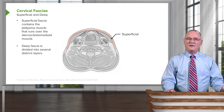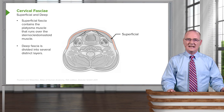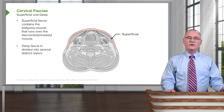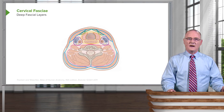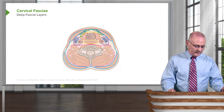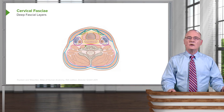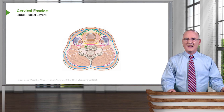Next, we have deep fascia. The deep fascia is more complex in that it is divided into several distinct layers. Here is an image that depicts in color the various deep fascia components — some in blue, a line in magenta, a line in yellow, a line in purple. Let's identify these various deep fascia layers.